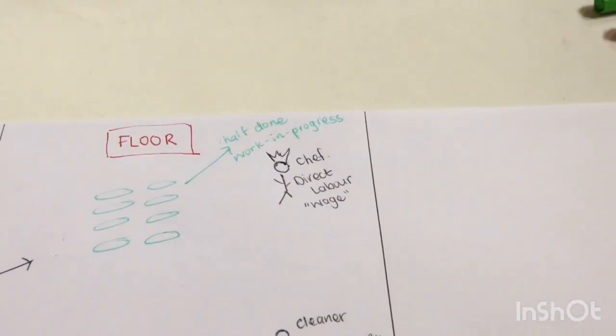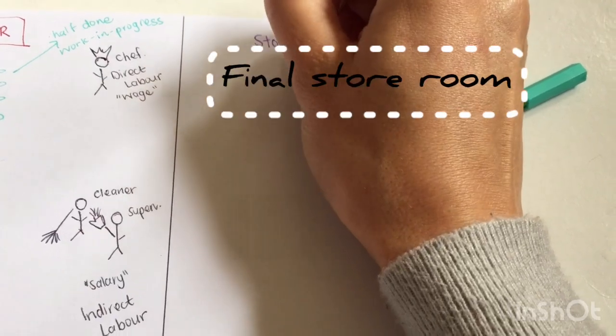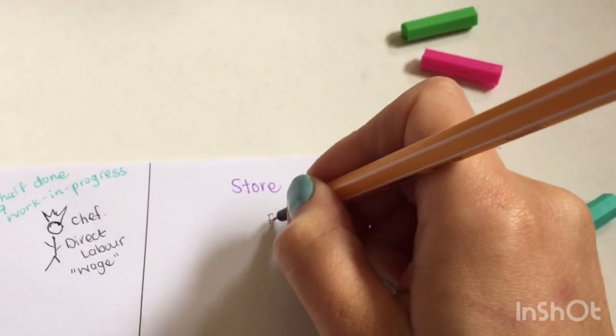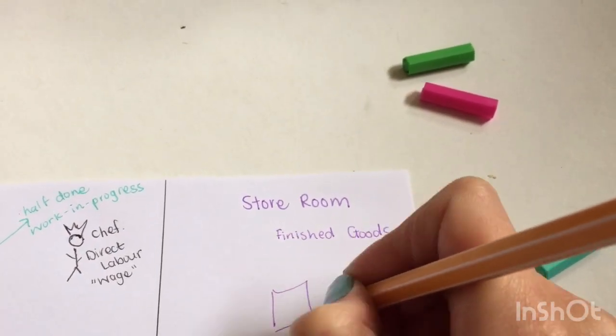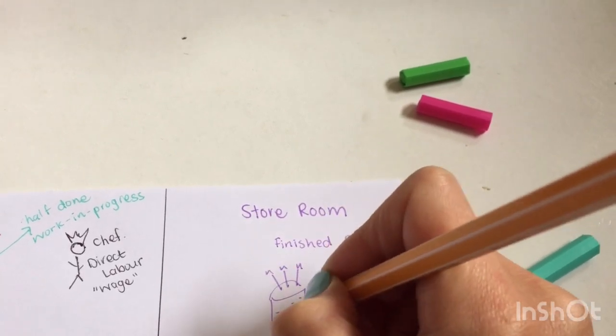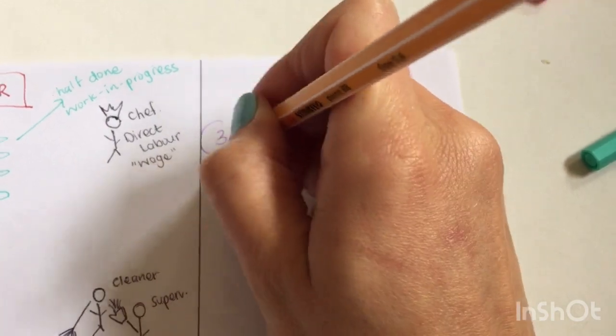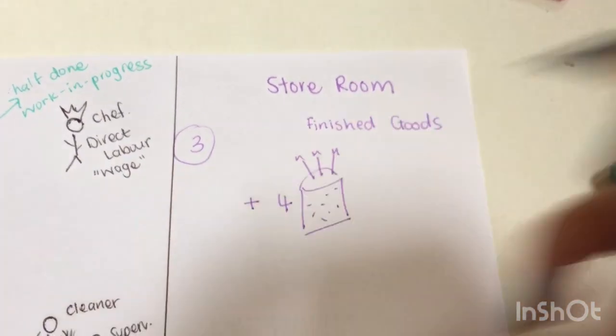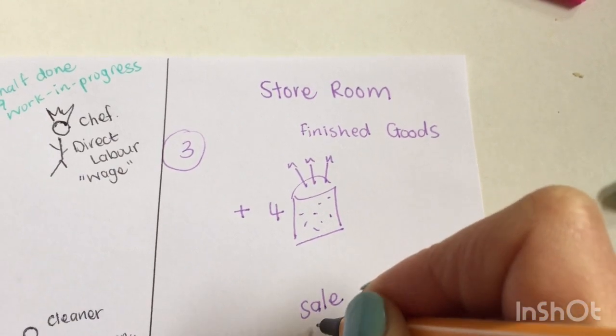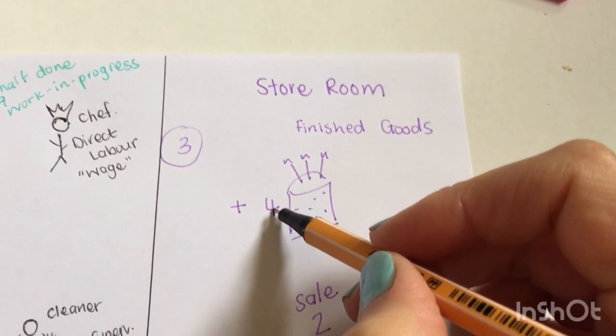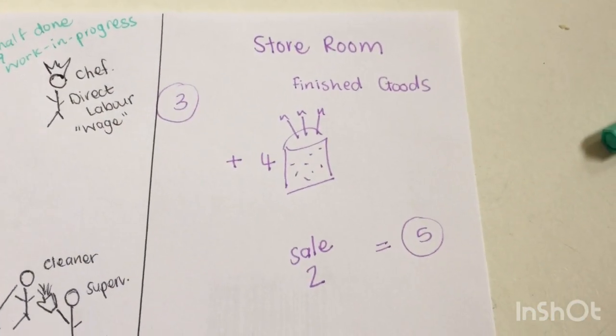Once a cake is done, the cake will move to the final store room. The final store room is for all the finished goods, so my finished cake will be there. The only thing that ever happens in my finished storage room is there might be three cakes there already. Then we add four more cakes to my finished storage room, which means I then—and I might sell, there will be a sale of two of them. Three plus four equals seven minus two that I sold will be five left. That's basically all that happens in my final storage room.